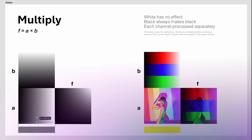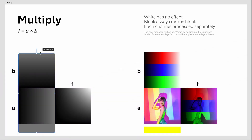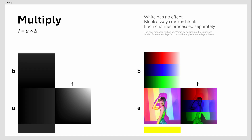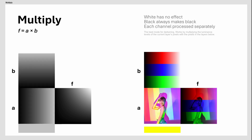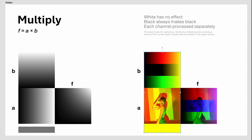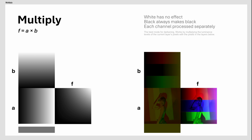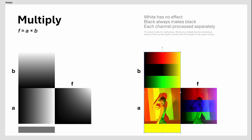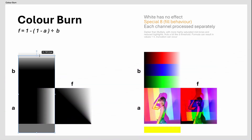The Multiply Blend Mode. The color values of each pixel are multiplied with the layer below, resulting in a darker overall appearance. It is probably the most used blend mode for darkening, as the multiply process reduces the overall brightness with natural-looking results. Can be used for creating shadows or overlaying textures.